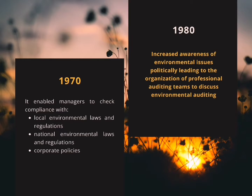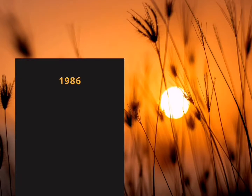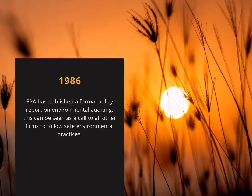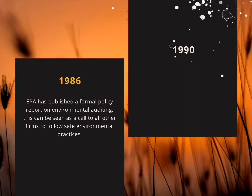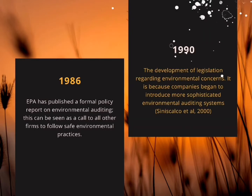It also increased awareness of environmental issues politically, leading to the organization of professional auditing teams to discuss environmental auditing. By 1986, the EPA had published a formal policy report regarding environmental auditing — seen as a call to all other firms to follow safe environmental practices, with a particular focus on how environmental auditing would help health and safety around the workplace. The 1990s saw the development of legislation regarding environmental concerns.